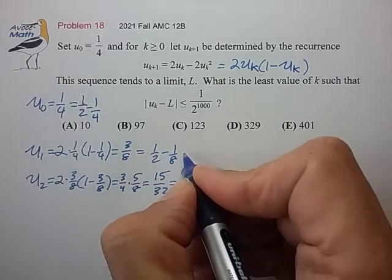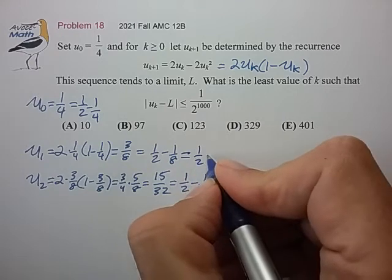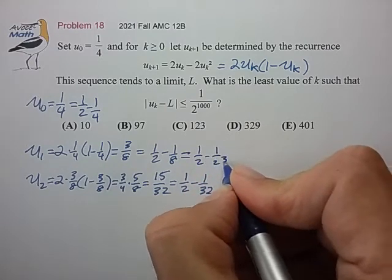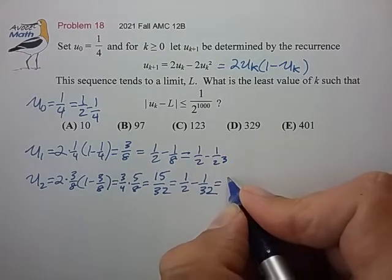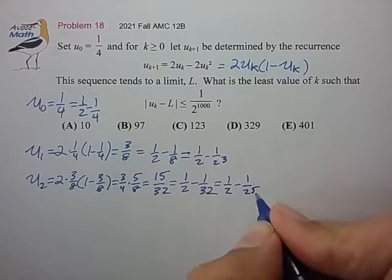And let's see here, let's write this as 1 half minus 1 over 2 to the third, and write this as 1 half minus 1 over 2 to the fifth.